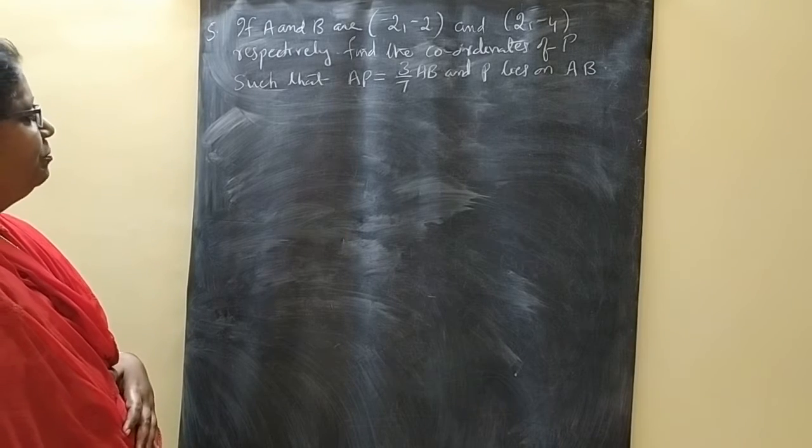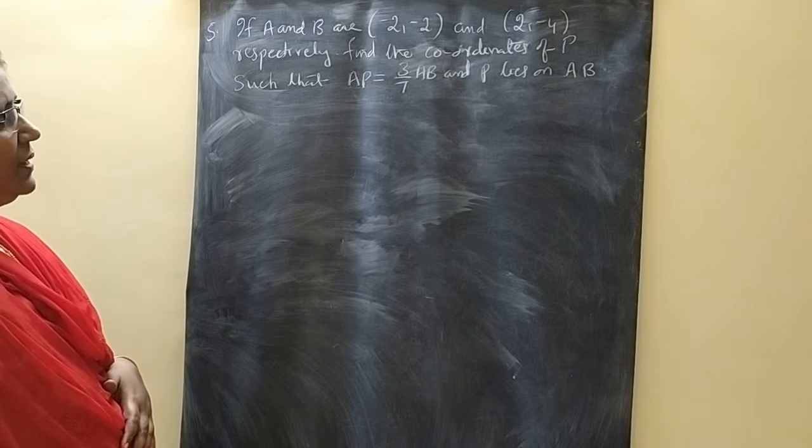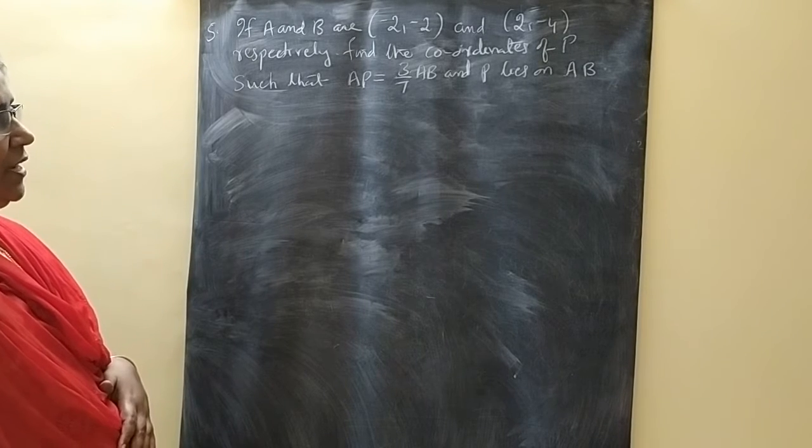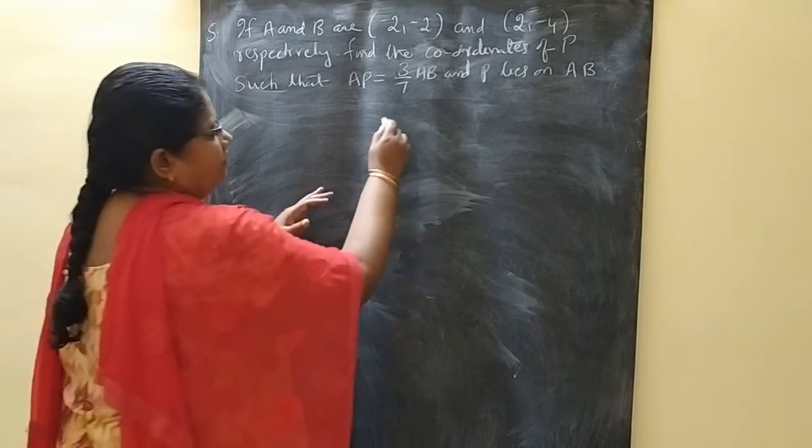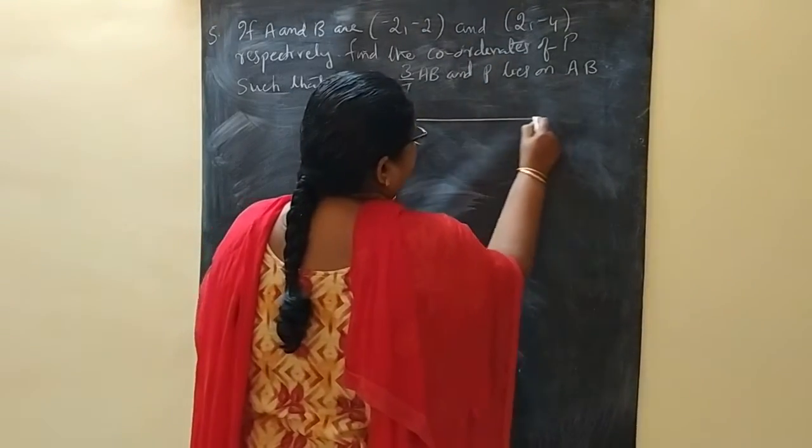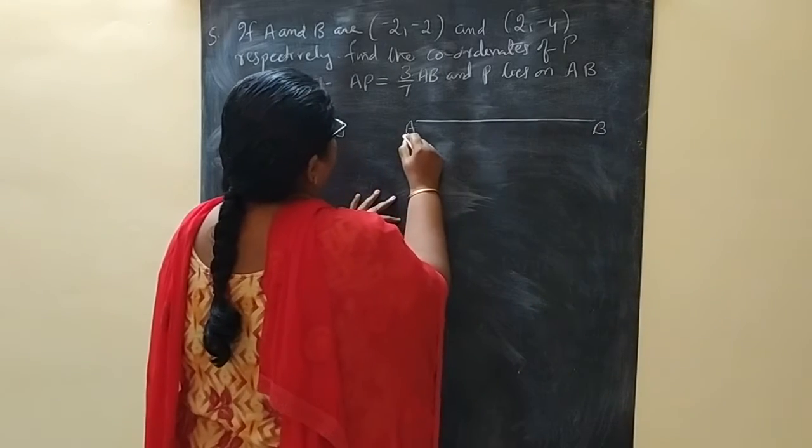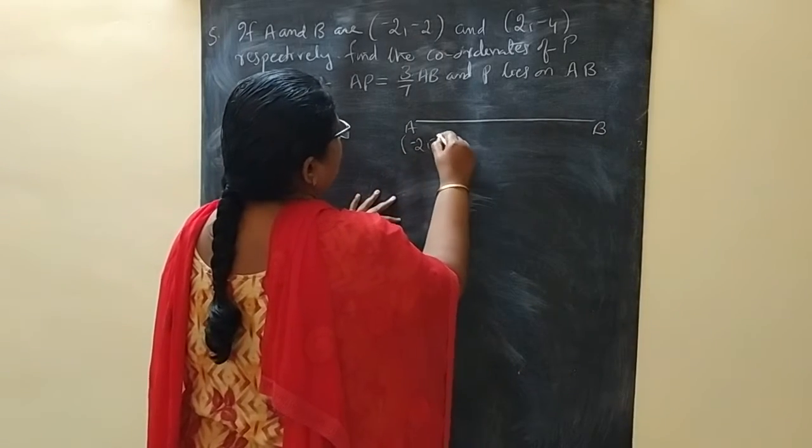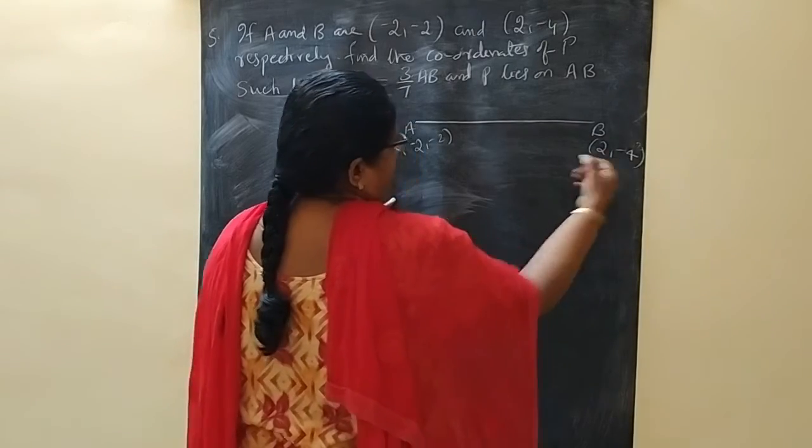Find the coordinates of P such that AP is equal to 3/7 AB and P lies on AB. We are drawing a line segment AB where A is (-2, -2) and B is (2, -4).